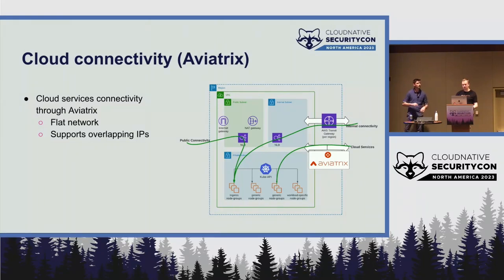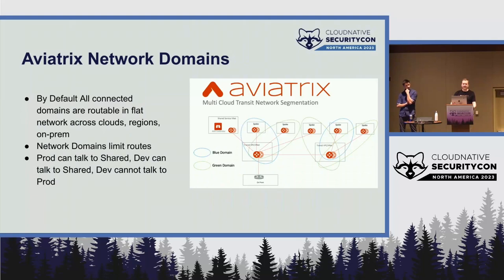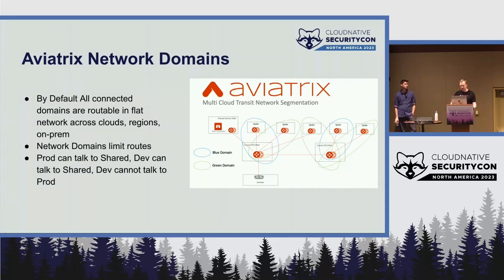Once you've established peering so pods can access shared services, Aviatrix by default would allow pods to communicate with one another — bypassing all the rules set up in our internal subnet. To prevent that, Splunk uses Aviatrix's network domains feature, which lets you specify which VPCs can talk to which other VPCs. For example, certain blue VPCs cannot talk to green VPCs and vice versa, but shared VPCs that are both blue and green remain accessible from all.